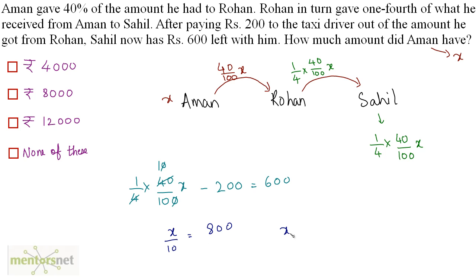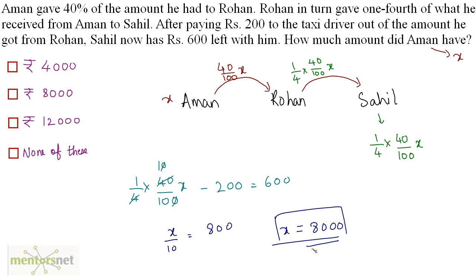X equals 800 × 10 = Rs 8,000. Therefore, Aman had Rs 8,000 in hand. Option B is the right answer.